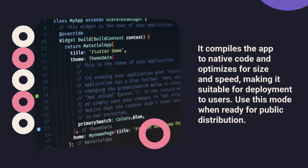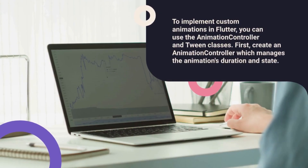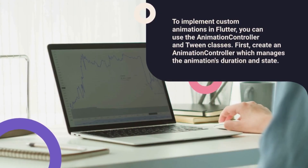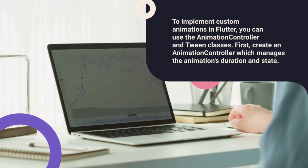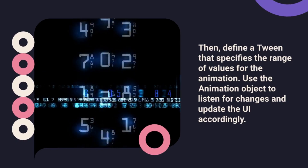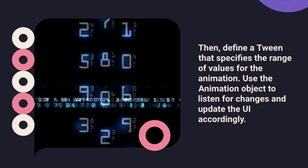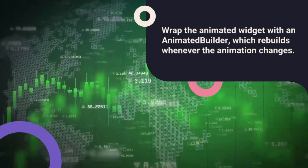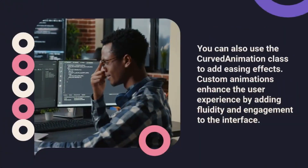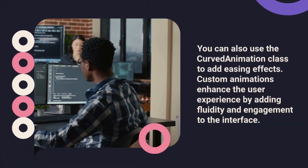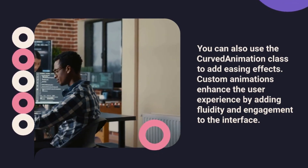Question 20: How do you implement custom animations in Flutter? To implement custom animations, you can use the AnimationController and Tween classes. First, create an AnimationController, which manages the animation's duration and state. Then, define a Tween that specifies the range of values for the animation. Use the animation object to listen for changes and update the UI accordingly. Wrap the animated widget with an AnimatedBuilder, which rebuilds whenever the animation changes. You can also use the CurvedAnimation class to add easing effects. Custom animations enhance the user experience by adding fluidity and engagement to the interface.